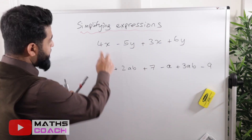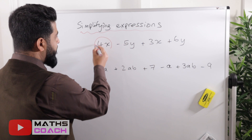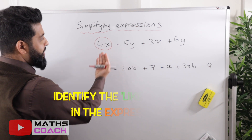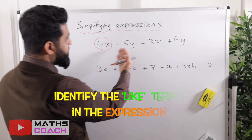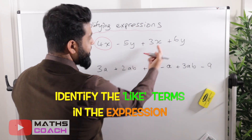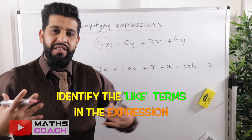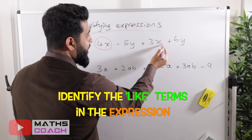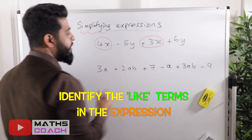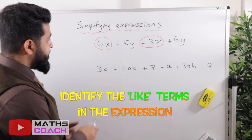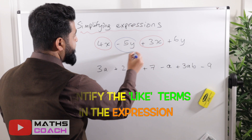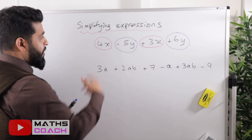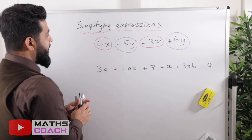Looking at the first example, the first term is 4x — I'll circle that. Now, what else is part of the x family? Going along, you can see 3x, so that belongs to the x family. The sign in front of a term is part of that term, so I include the plus sign when I circle it. The other terms are minus 5y and plus 6y, which are paired together.